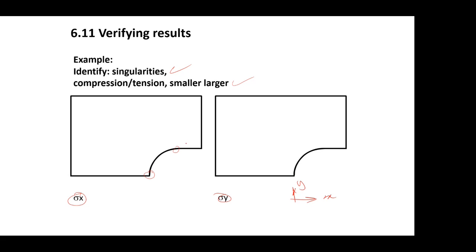It depends on what sort of load case you have. For example, if you have a re-entrant corner and no loads affecting that corner, you could still potentially have a stress singularity, but it won't manifest if the loading scenario doesn't stress the corner. The potential is there, but the loading may not trigger it. So be careful about re-entrant corners — be cautious anyway, but check whether the boundary conditions and loads actually result in a singularity.